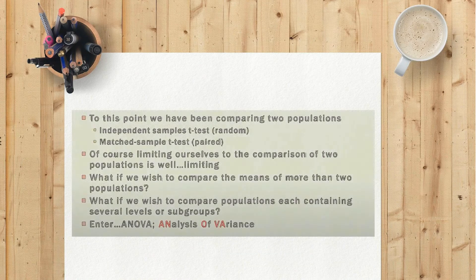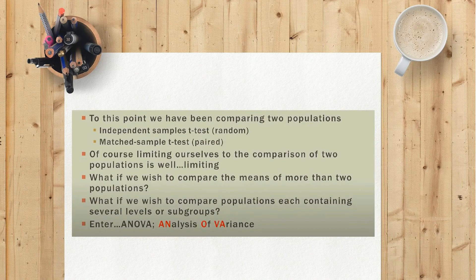To this point we have been comparing two populations: one, independent sample t-test; two, matched sample t-test, paired. Of course, limiting ourselves to the comparison of two populations is too limiting. What if we wish to compare the means of more than two populations? What if we wish to compare populations each containing several levels or subgroups? Enter ANOVA — analysis of variance.